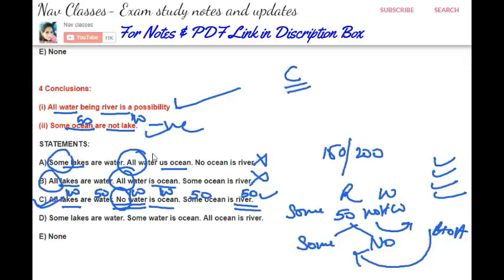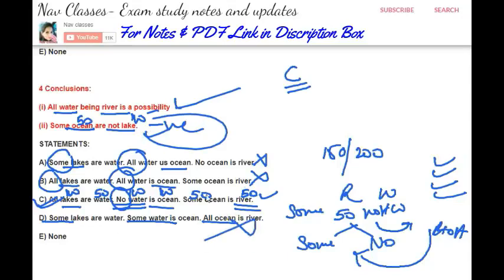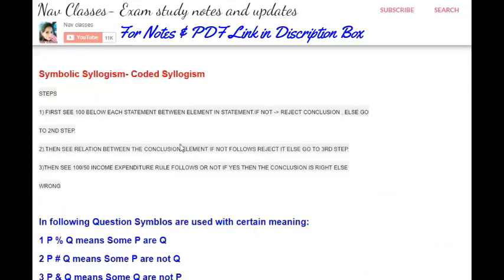Looking at another statement: ocean and lakes — all statements are positive, so it is not possible to get a negative conclusion from that. Now let's see the concept of symbolic or coded syllogisms. Here, first you will make a table as per the given symbols, then follow three steps.